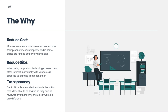Adopting open source solutions can also help reduce silos. When using proprietary technology, issues are often resolved between a vendor and a lab, and this means that any improvements that are made may not be shared. Open source allows research groups to learn from each other and adopt improvements as they see fit.